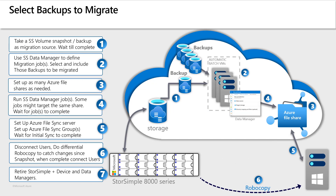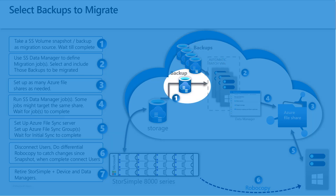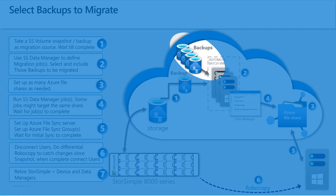StoreSimple offers differential backups on the volume level. StoreSimple data manager migration jobs use the latest StoreSimple volume backup as the source. So at a minimum, ensure that all your volumes have a very recent backup, which can be used as a source for the migration. These backups can take a while, so do this sometime before you want to start a migration. Before starting your migration, you need to decide if, as part of the migration, you also have a need to move any of those StoreSimple snapshot backups into your new Azure file shares. If so, then select the set of backups to migrate that meet your needs. If possible, bring a subset of your backups rather than all of them. When defining your StoreSimple data manager migration jobs, you will have the opportunity to select the backups you want to migrate.